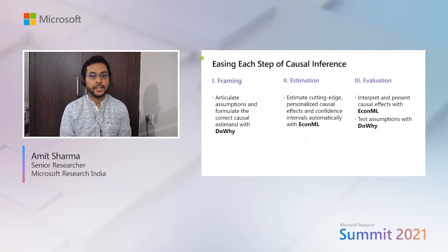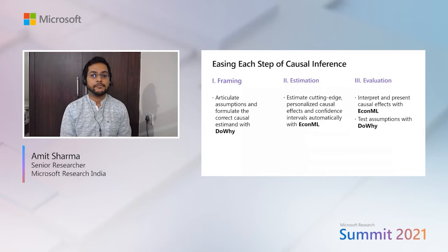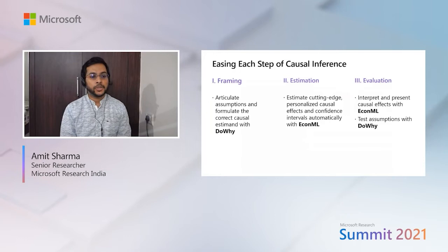Thank you, Eleanor. Now I'll go deeper into each step of causal inference and show how these libraries can help you conduct a causal analysis. As Eleanor mentioned, there are three steps: framing of the causal question, then estimation of the causal effect, and then evaluation of how good your causal estimate is. And as we'll see, because domain expertise and assumptions are so important, evaluation also becomes a critical part. In the first step, the framing, it is important to articulate the assumptions formally and formulate the causal estimate — both steps can be done using DoWhy.